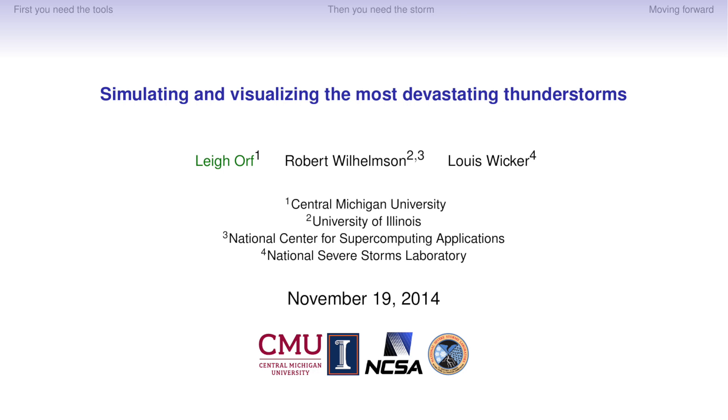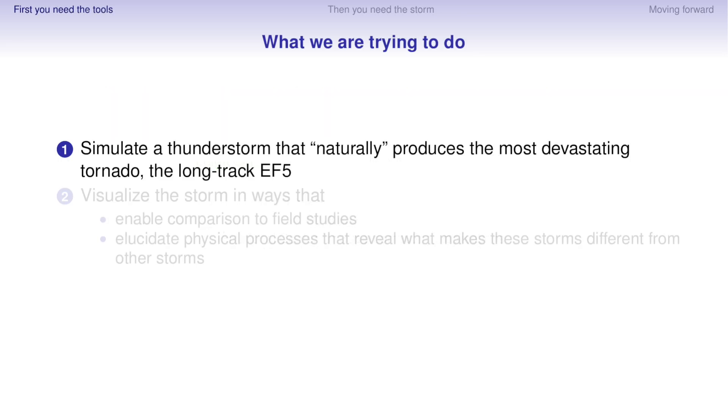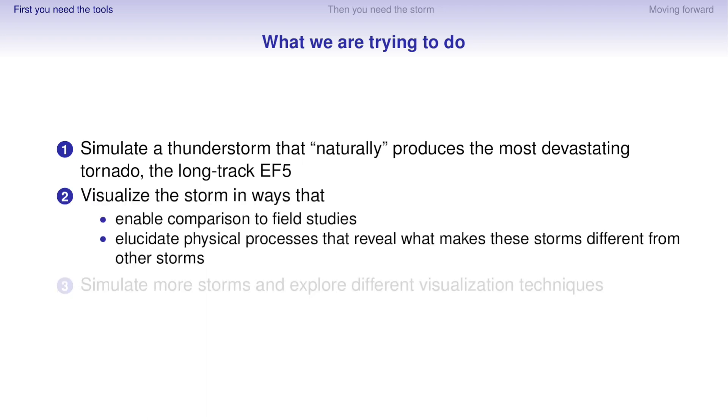This is the result of some work that's been going on for a little while. If I had to summarize what we're doing, we're trying to simulate a storm that naturally produces the most devastating tornado, a long-track EF5. When I say naturally, I mean it should just form within the simulation without any coaxing.